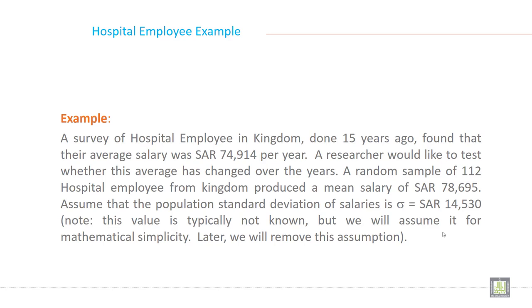So just try to focus what is given in this slide. What information is available in this slide? So let's identify one by one. Start from here. This is the first information given. The average salary before 15 year was 74,914. So mu is equal to 74,914. This is the first information.